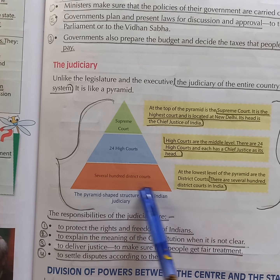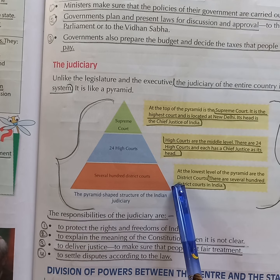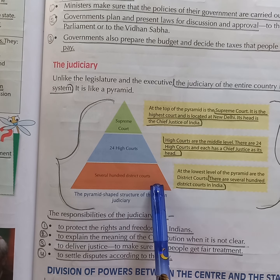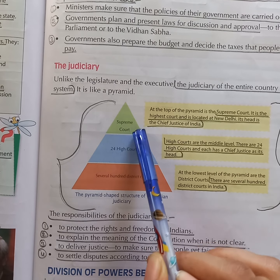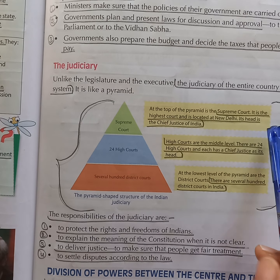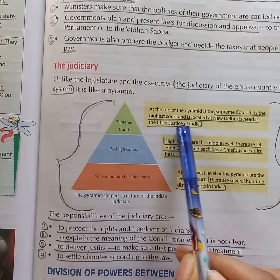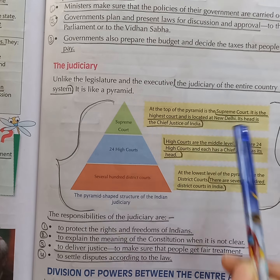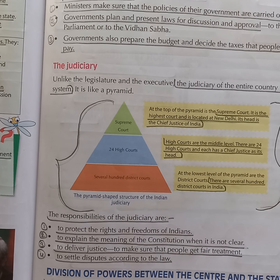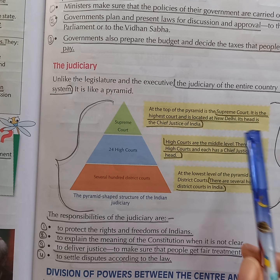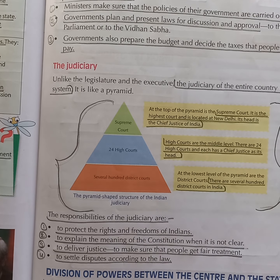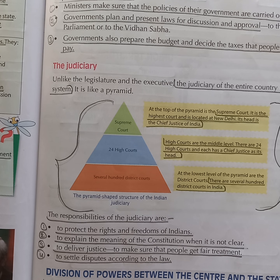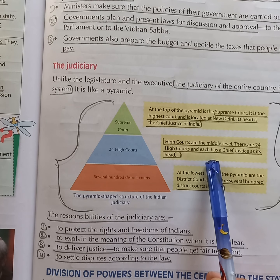The Indian Judiciary has a pyramid-shaped structure. There are several hundreds of district courts, there are 24 high courts, and there is only one Supreme Court. The Supreme Court is the highest court and is located in New Delhi. The head of the Supreme Court is the Chief Justice of India. There are 24 high courts in India.